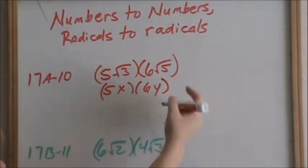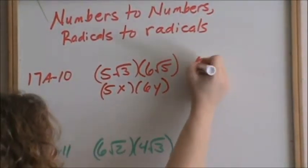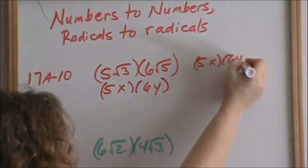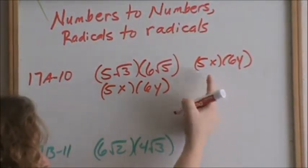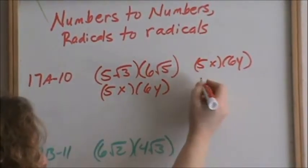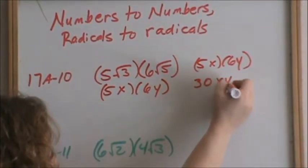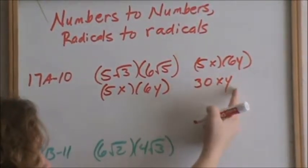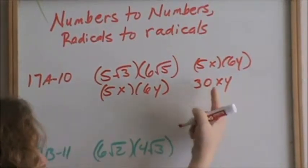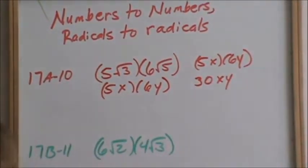I'm actually going to work this over here to the side. So I have 5x times 6y. In the world of algebra, you'd multiply numbers to numbers. 5 times 6 is 30, and x times y is xy. Remember, when you have letters together, x times y, or xy, that means x times y.